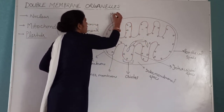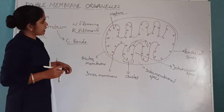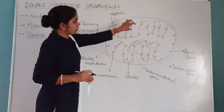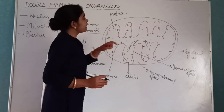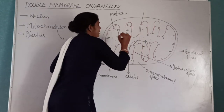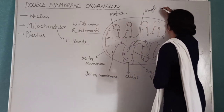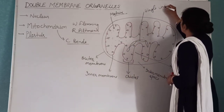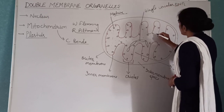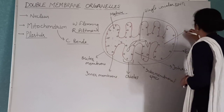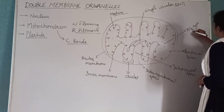The space enclosed by the inner membrane is called the matrix. Inside the matrix, soluble proteins are present. Also present here is single circular DNA along with 70S type ribosomes.